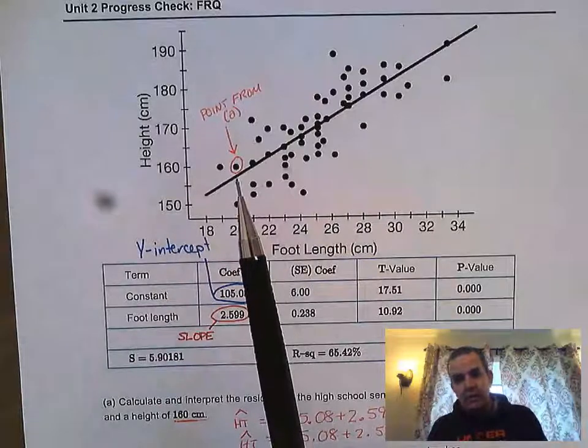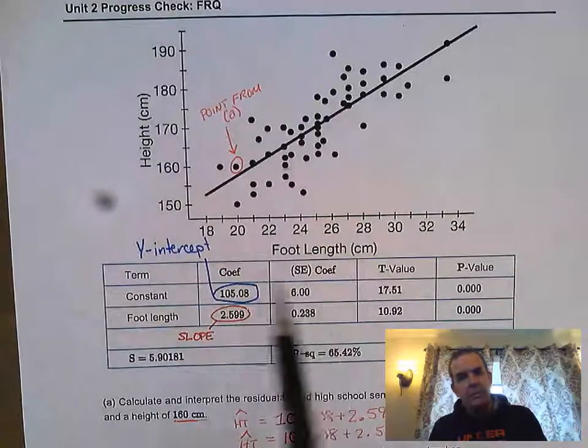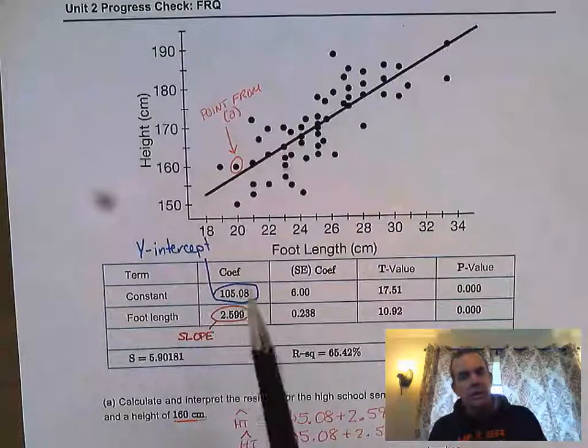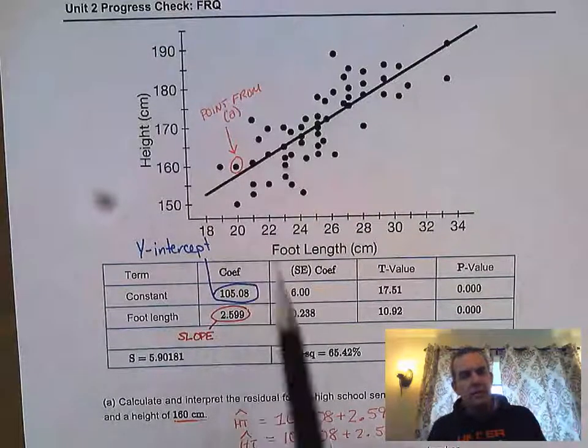To do that, we need to interpret this table. The big part you need to focus on is the first column, the coefficient column. The constant 105.08 is the y-intercept and 2.599 is the slope.